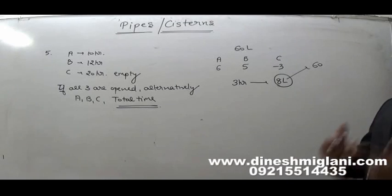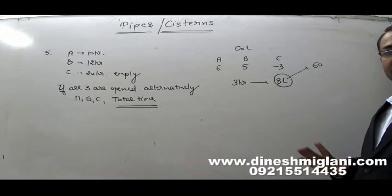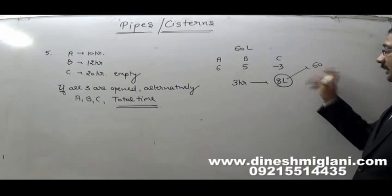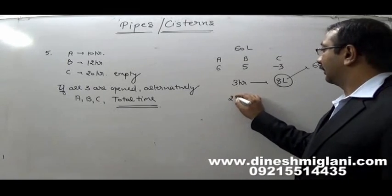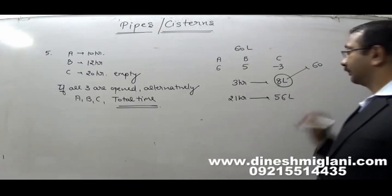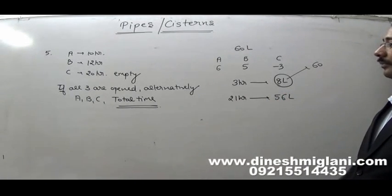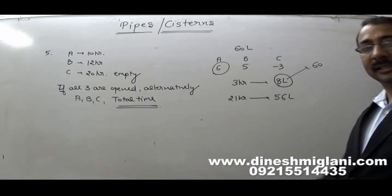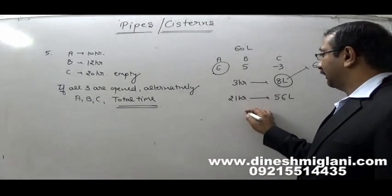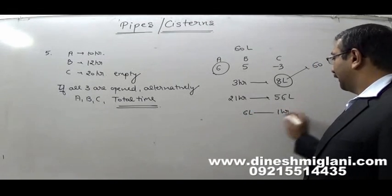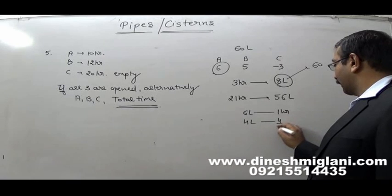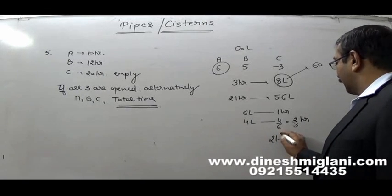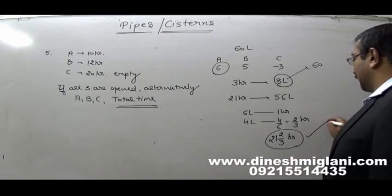60 is not an exact multiple of 8, so take the closest multiple smaller than 60: 8 × 7 = 56. In 21 hours, 56 liters have been filled. In the 22nd hour it is A's turn. A fills 6 liters per hour, but only 4 liters remain, so A takes 4/6 = 2/3 hours. Total time = 21 + 2/3 hours. That becomes your answer.